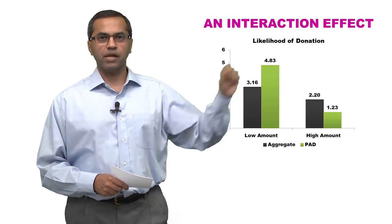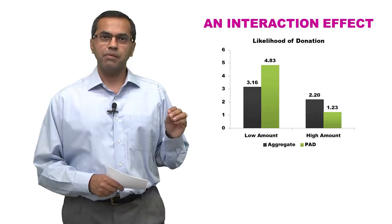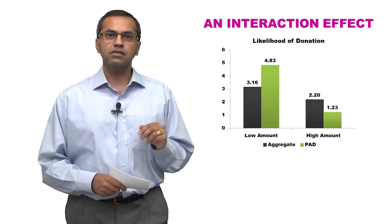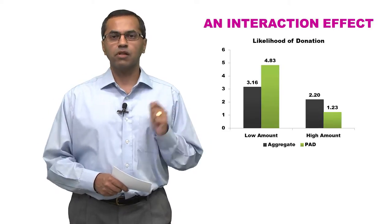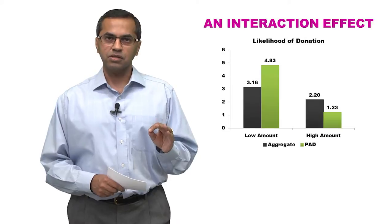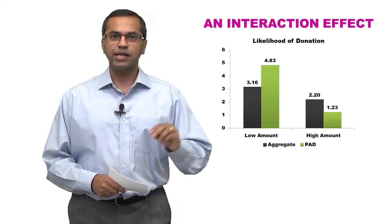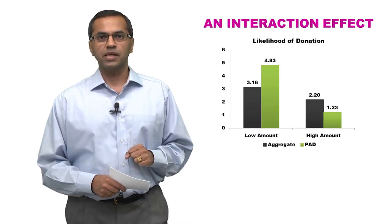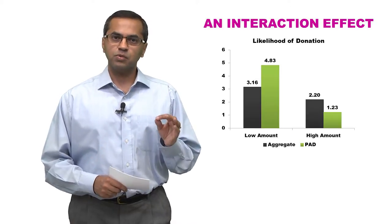But let's look at the right-hand side panel. That's the panel where the amounts were high. And notice what happens there. In that condition, we see a reversal of the basic effect. In other words, we find that people who saw the pennies-a-day condition actually were less likely to donate than people who saw the aggregate condition. So if you look at the big picture, this is what is happening.